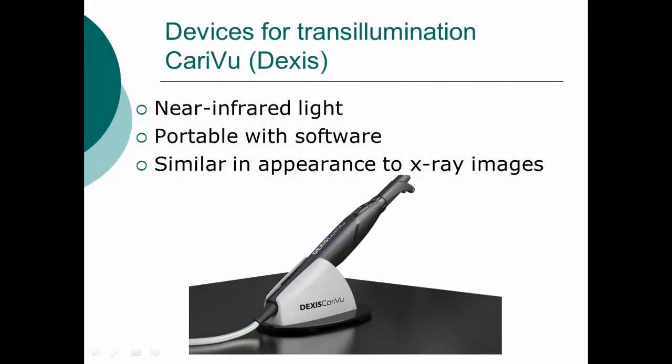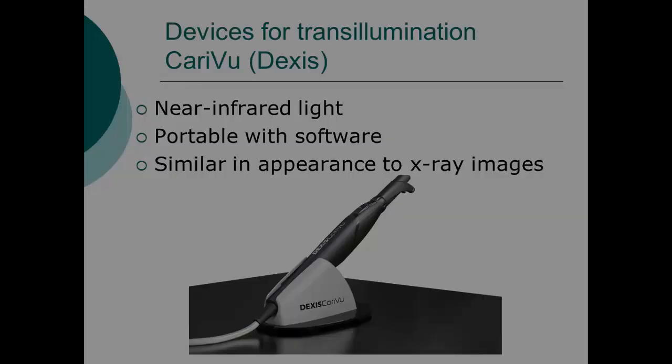We also see digital devices for transillumination, the most popular being from DEXUS, paired with their digital radiology system called the CaryView. Instead of using visible light, it uses near-infrared light combined with a capture device, and it's portable and has software. It's similar in appearance to x-ray images — we use a capture video camera tuned for near-infrared light to look between teeth. Let's take a look at some examples.